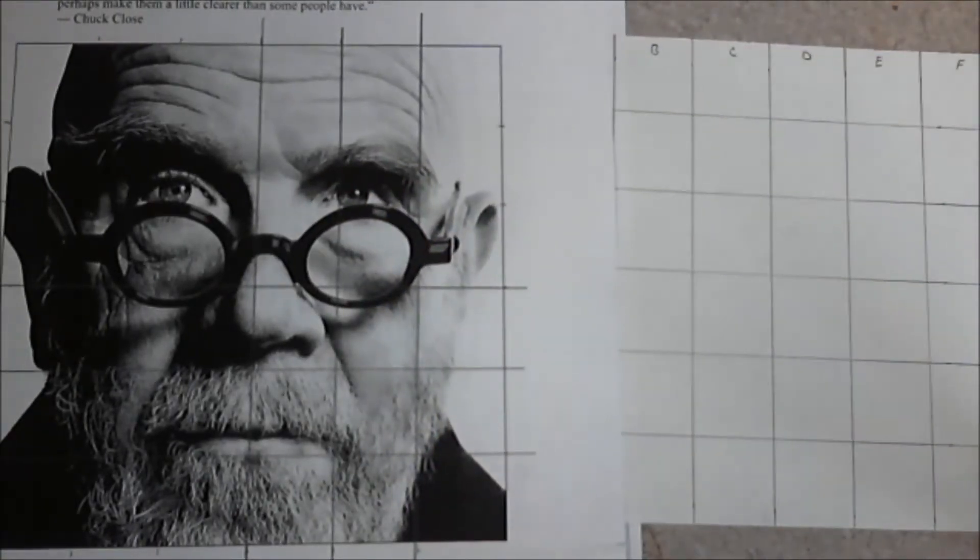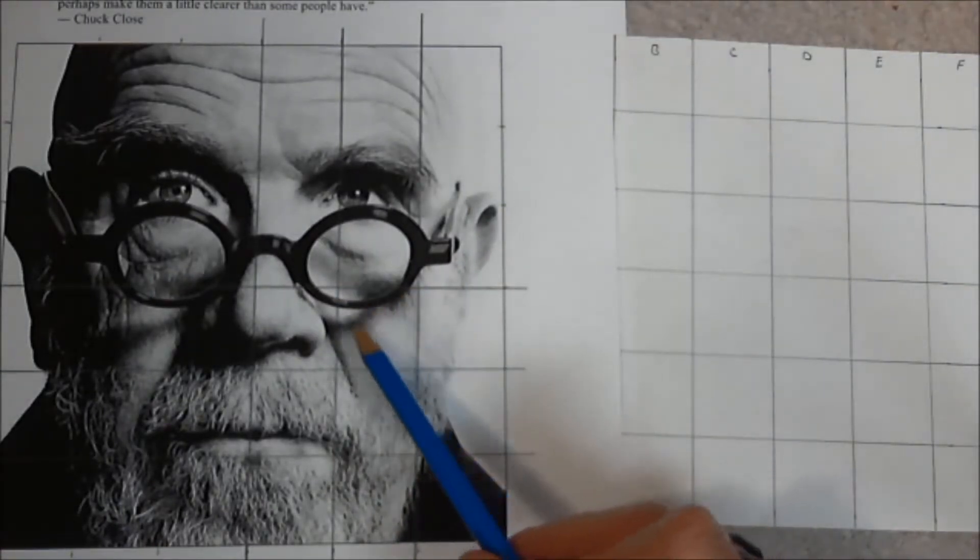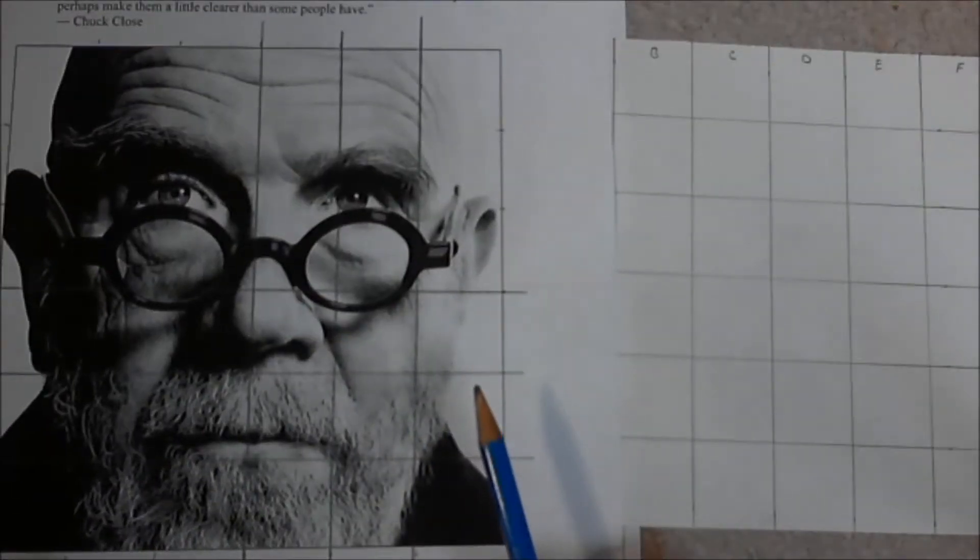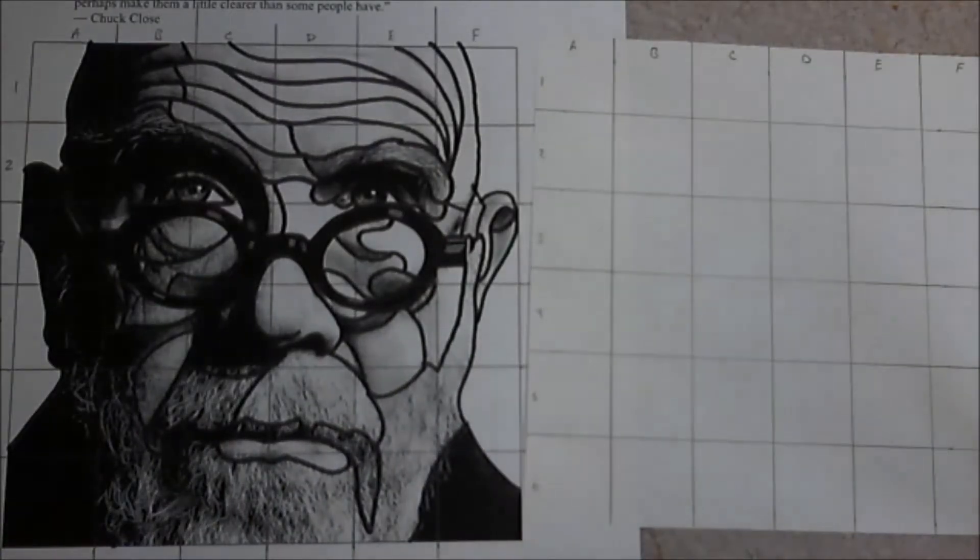If you look at Chuck Close's early work, that's exactly how he did it with an airbrush. He would look at the soft values and grid by grid, square by square, he would transfer things up. For our sake, what we're going to be doing is we're going to be using a simplified version.